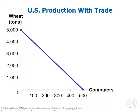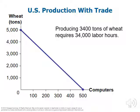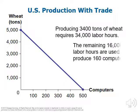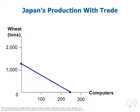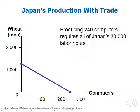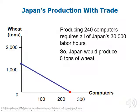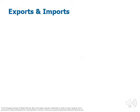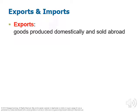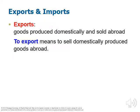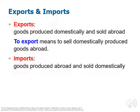Here we've graphed out the solutions: producing 3,400 tons of wheat requires 34,000 labor hours, the remaining 16,000 produce 160 computers for the U.S. Japan's production under specialization: 240 computers requires all 30,000 of Japan's labor hours, and Japan produces no wheat. Now that we've found the two countries specializing in production, let's let them trade. Some terminology you need to know: an export is a good produced domestically and sold abroad; an import is a good produced abroad and sold domestically.